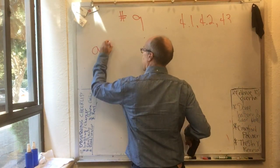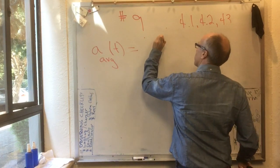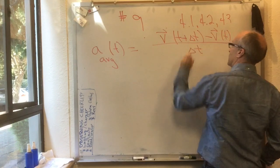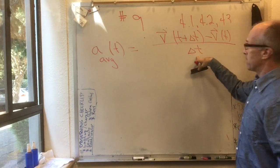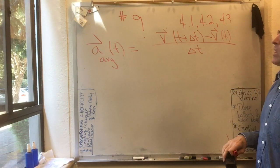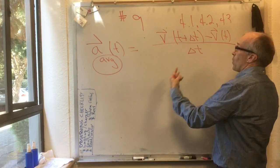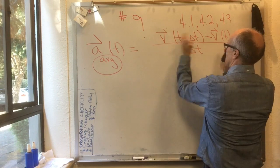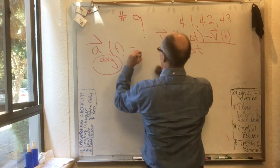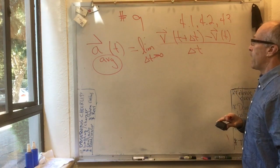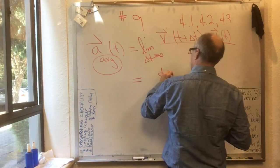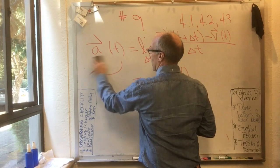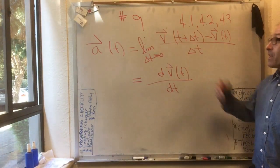The average acceleration at time t is the velocity at time t plus delta t minus the velocity at time t, divided by delta t. This is a vector divided by a scalar, giving an acceleration vector. To get instantaneous acceleration, we scrunch delta t down to zero, taking the limit — which gives us dv of t dt. This is the instantaneous acceleration, as opposed to the average acceleration.